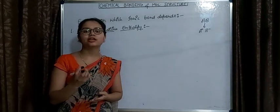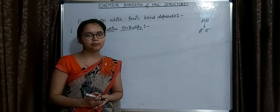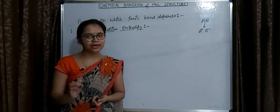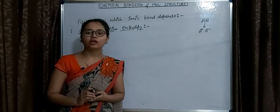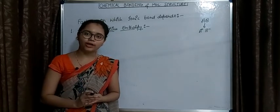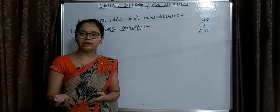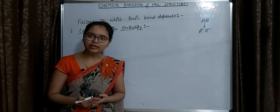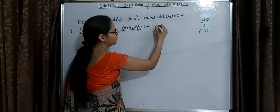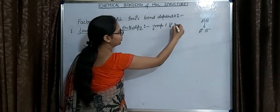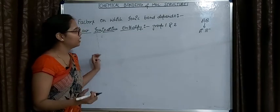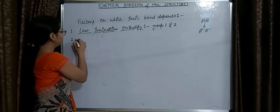Now, the elements which have low values of ionization enthalpy are the elements present in Group 1 and Group 2 of the periodic table — the alkali metals and alkaline earth metals. They have low values of ionization enthalpy, so they have a greater tendency to form ionic compounds. Group 1 and Group 2 elements will form ionic compounds dominantly.